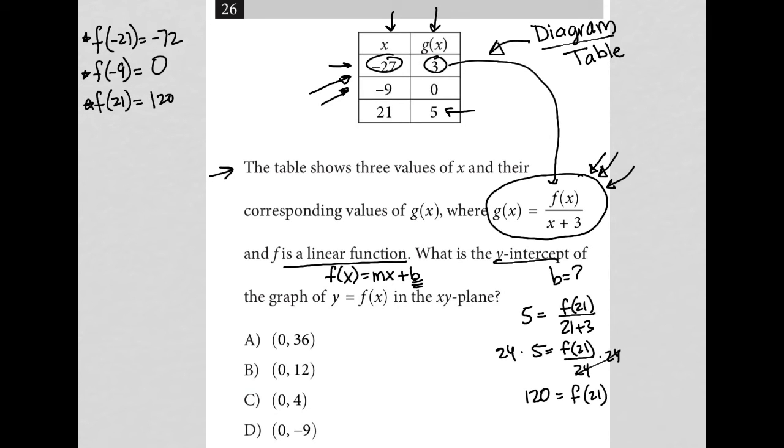So how is this helpful? Well, this is helpful because now these are also ordered pairs. Like this is the point negative 27 comma negative 72. This is the point negative 9 comma 0. This is the point 21 comma 120. But these points are no longer for the g of x function. They're now for the f of x function.